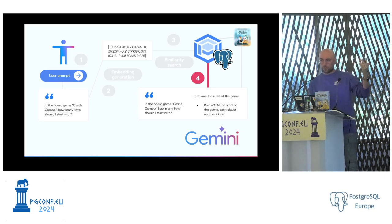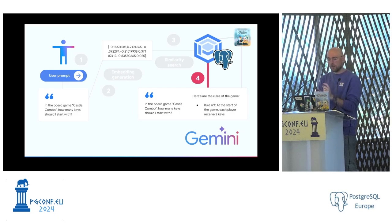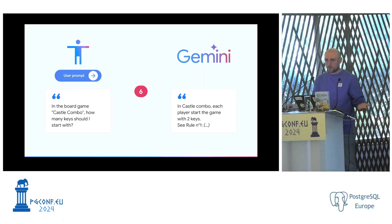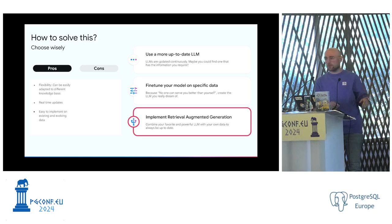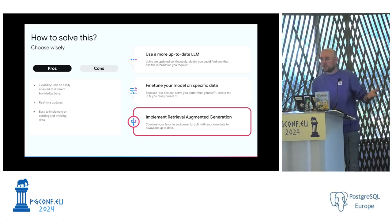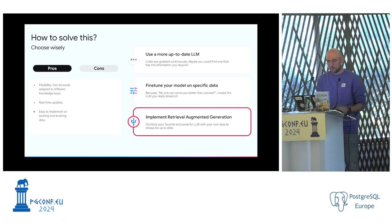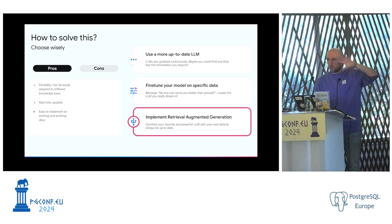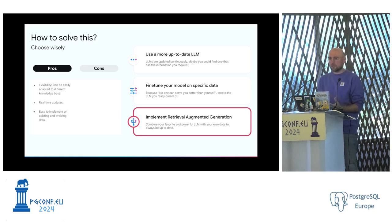Based on this, we build a new prompt combining the initial question and the rules found in Postgres, then send both to Gemini. Finally, Gemini can give us the right answer because it now has the data. The pros of this solution are flexibility — you can apply this to anything in your business or personal data — and it supports real-time updates because every time you insert new data into Postgres it becomes available to the RAG chain immediately.